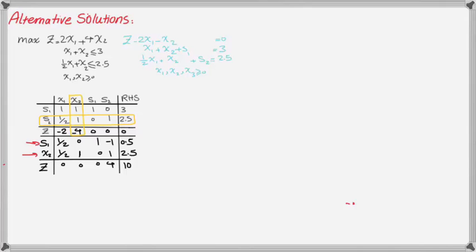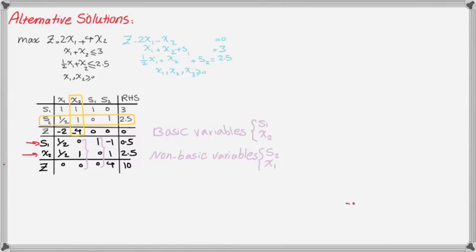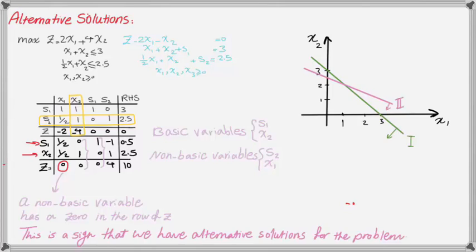In this table, the basic variables are S1 and X2, and the non-basic variables are any variables not in our basis — so S2 and X1 are non-basic and have a value of zero. Basic variables should have an echelon form in the simplex table. We see that form for S1 and X2. However, for X1, we see a zero in the row of Z. For a non-basic variable in the final table of a max problem, we typically expect a positive number, not zero. But when we do see zero, it signals a special condition: we have an alternative optimal solution.